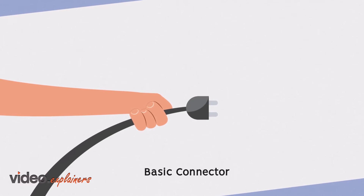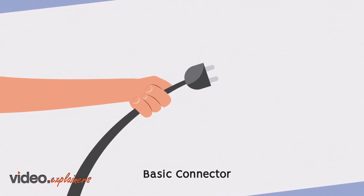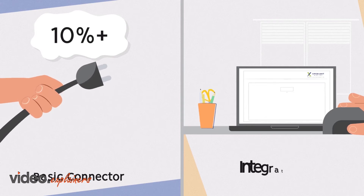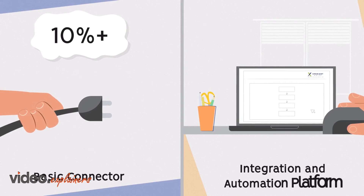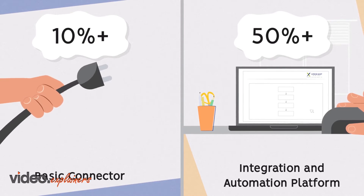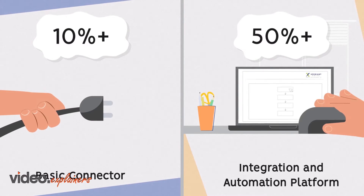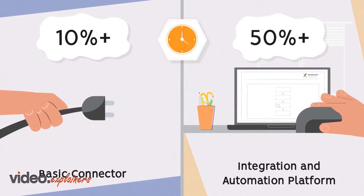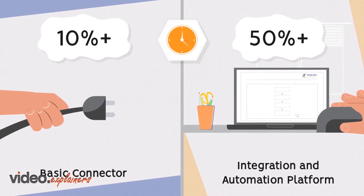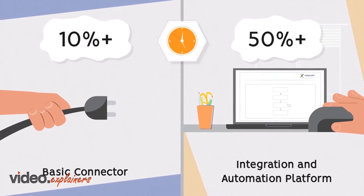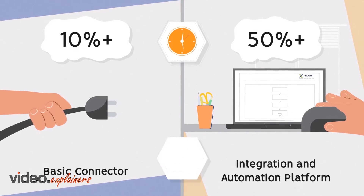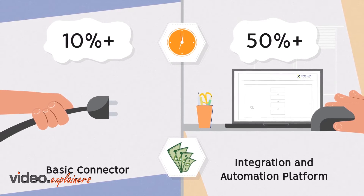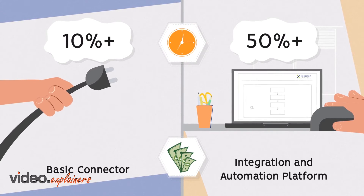On value, the basic connector should provide improvements of 10–15%, while the integration and automation platform can drive 50% plus in savings and improved speed to market. Think about that ROI — 50% of your current investment can be saved or reallocated to new content and product launches.